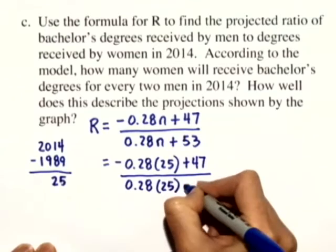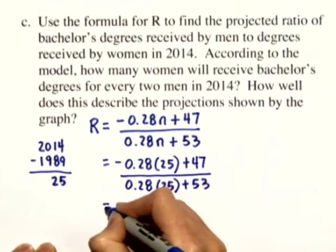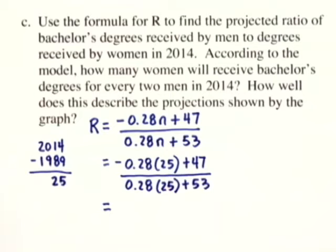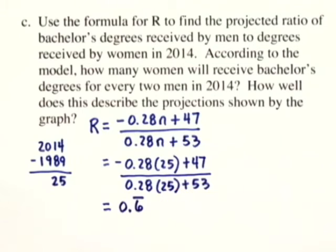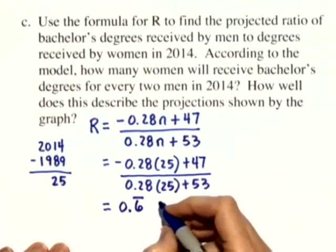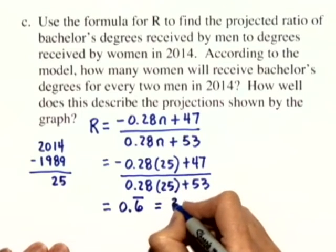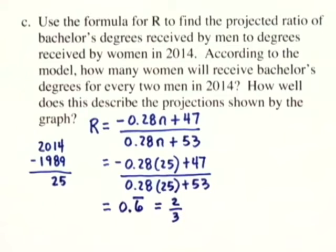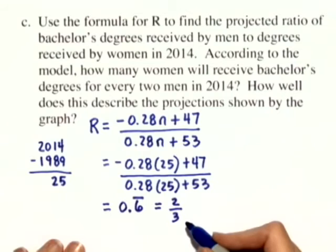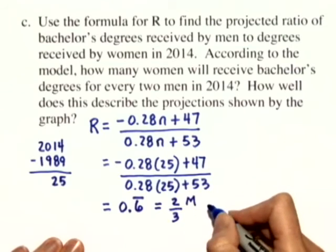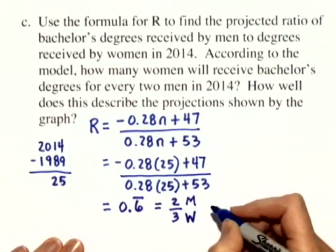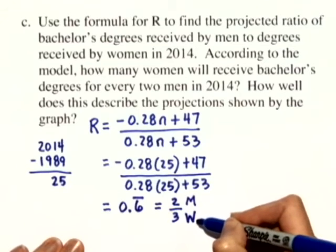We substitute 25 in again. When we calculate this ratio using a calculator, we come out with a total of 0.666 repeating. 0.666 repeating can be approximated by the fraction 2/3. So the ratio of 2/3 represents 2 men for every 3 women receiving a bachelor's degree.